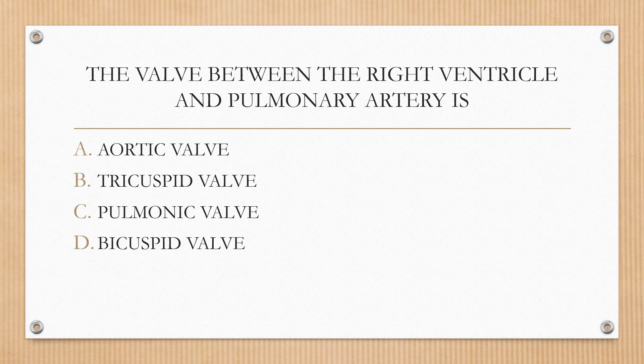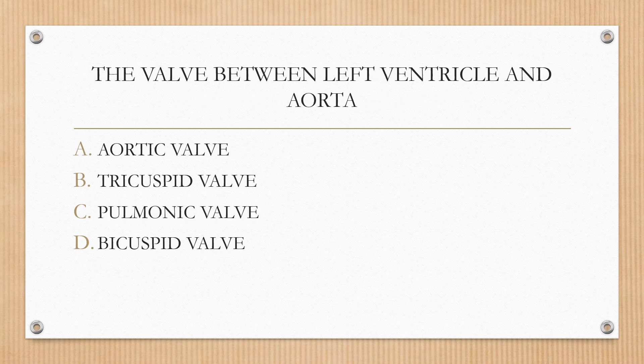Next question. The valve between the right ventricle and pulmonary artery is: option A aortic valve, option B tricuspid valve, option C pulmonic valve, option D bicuspid valve. The correct answer is option C, pulmonic valve.